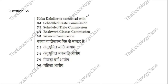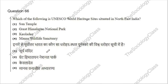Question 65: Kaka Kalelkar is associated with — Scheduled Caste Commission, Scheduled Tribe Commission, Backward Classes Commission, or Boomin Commission? The correct answer is C — please remember, Backward Classes Commission.